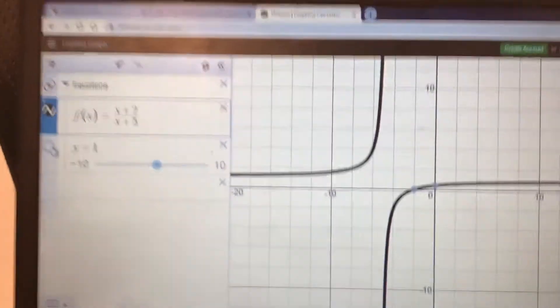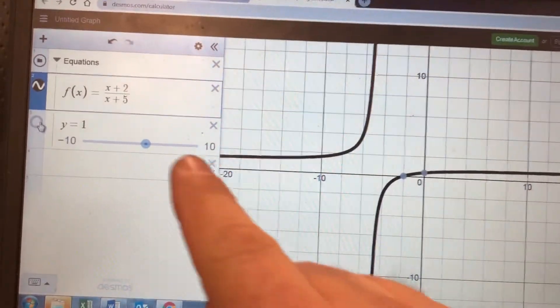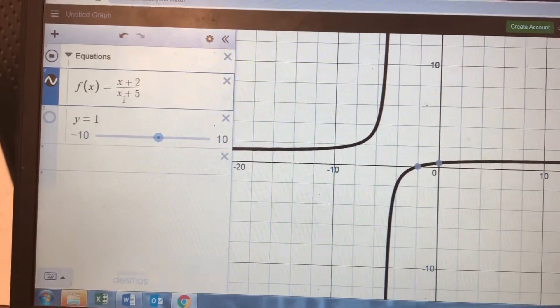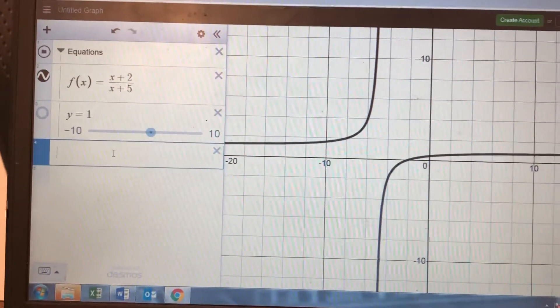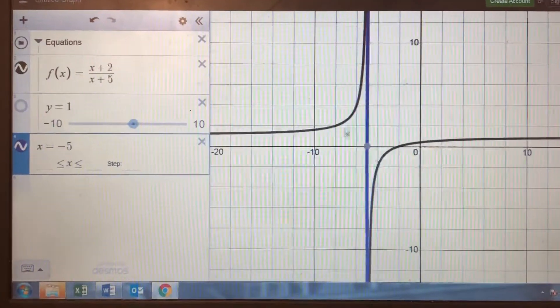I've got a graph of a rational function here. It's (x+2)/(x+5), which by the way should have a vertical asymptote at x equals negative 5. And if I type x equals negative 5, you can see that does serve as a vertical asymptote.